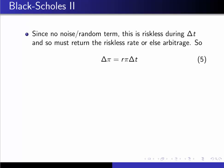Since there's no noise or random term - remember we talked about the trend and noise term, the deterministic and random term - since in our portfolio there's no noise or random term, then this portfolio is riskless during Delta T at that time.